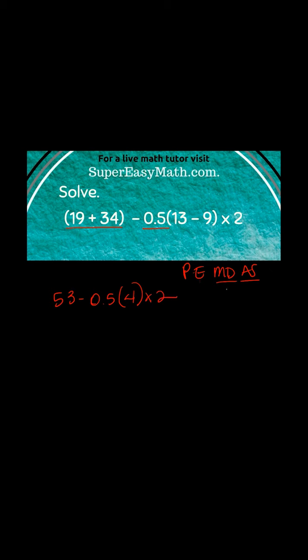Now I can see that I don't have any exponents. Now it's time for multiplication and division and I have quite a bit. The 0.5 needs to be multiplied by the 4 and then that answer needs to be multiplied by the 2.